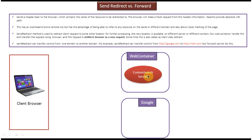Here you can see the web container — it has a custom search servlet. Suppose a request comes to the servlet and I want to redirect the request to google.com. This is not possible using the RequestDispatcher forward method because google.com is not within the same container — it is outside the web container. So I have to use sendRedirect to redirect the request to google.com, which is possible using the HttpResponse object's sendRedirect method.